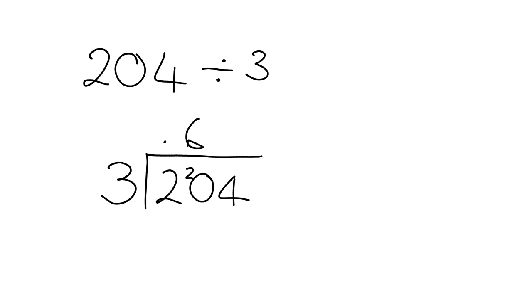So 3 times 6 is 18, so we've got 2 left over from that 20, so the 2 gets passed over to here.